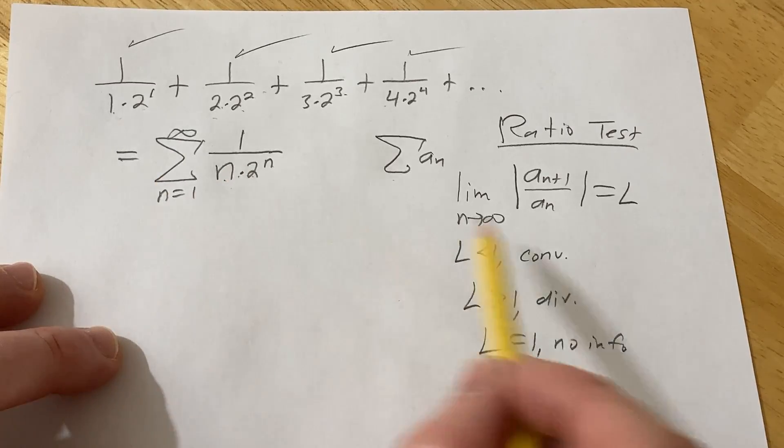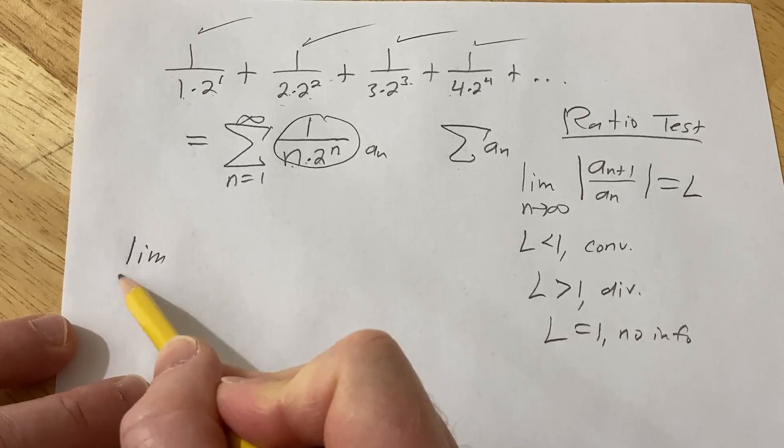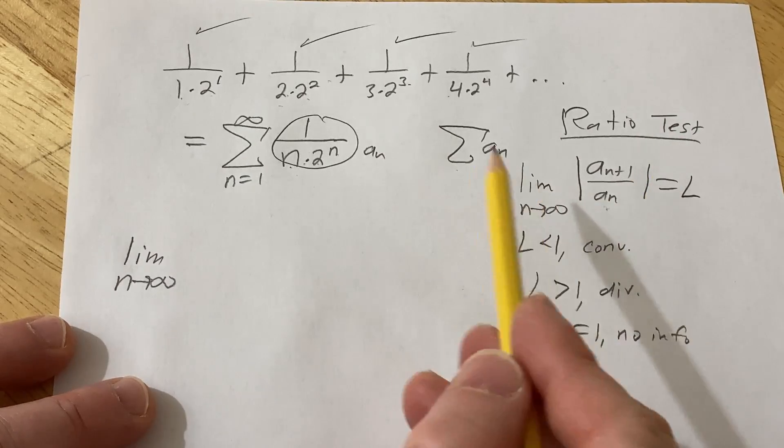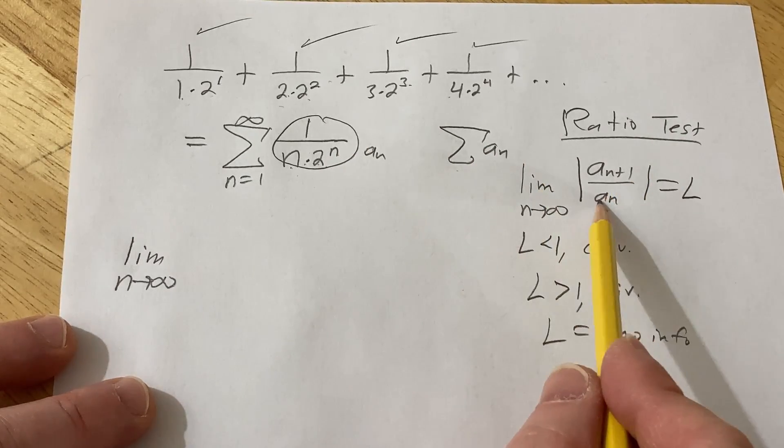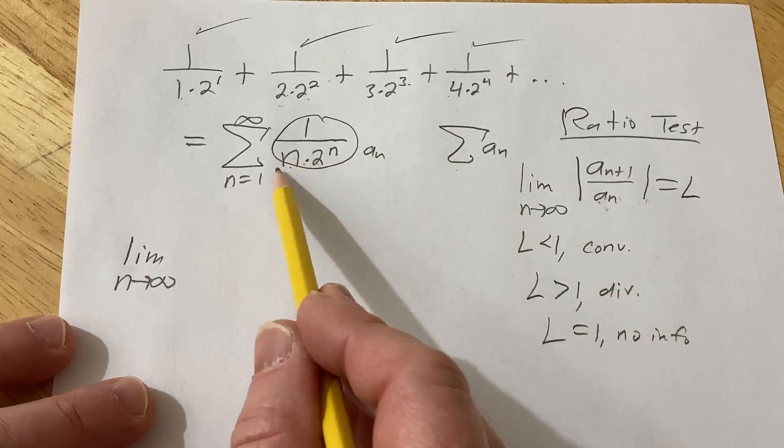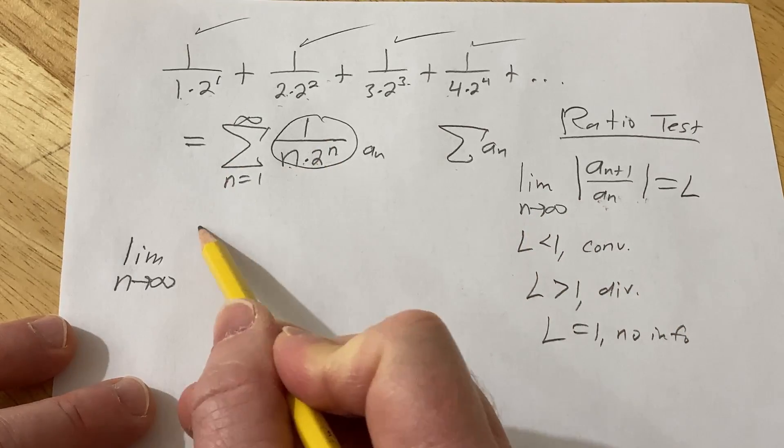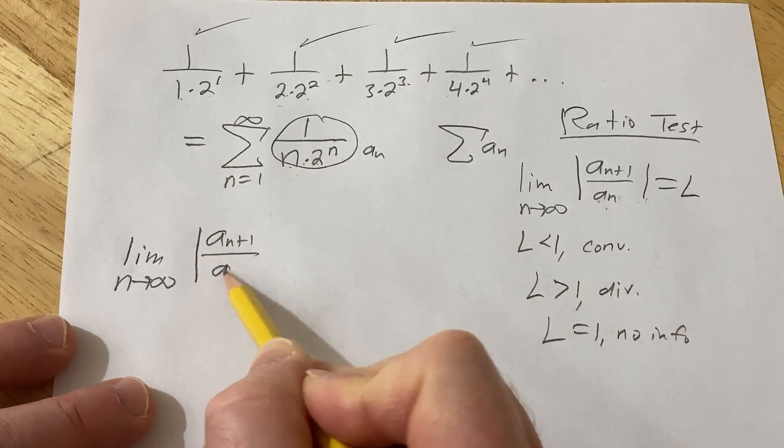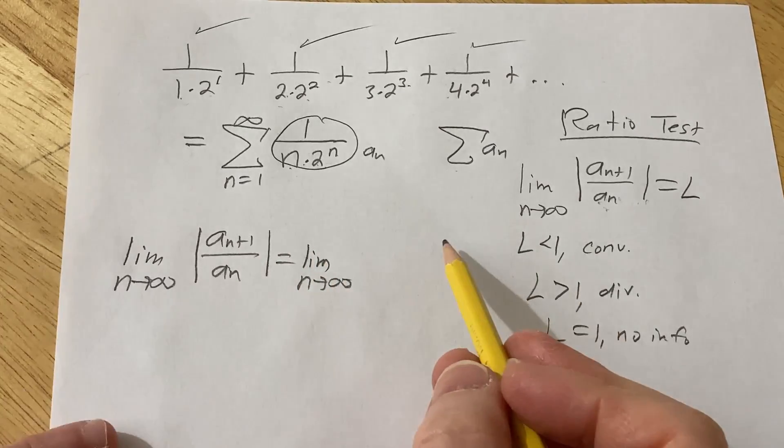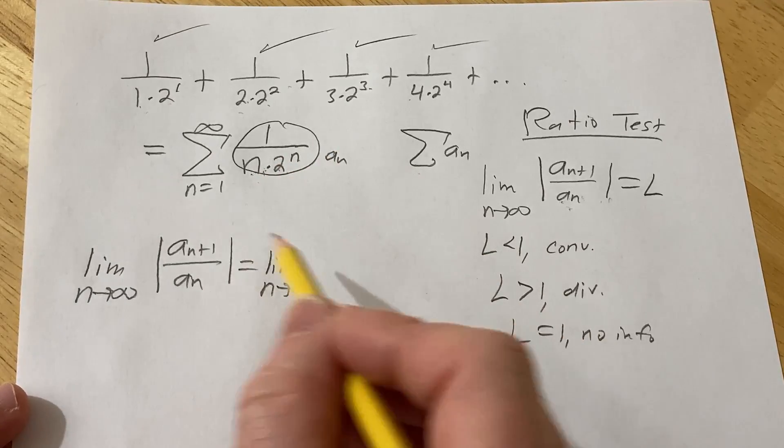So in this problem, we first have to identify our a sub n, which is right here. So let's go ahead and write it out. Limit n approaches infinity. And everything here is positive, so you don't really need the absolute value. You have to be careful though. Normally when you're dealing with power series, you'll have like an x, and you don't know if x is positive or negative. So you do want to leave the absolute value. However, in this case, we know n is always positive, and everything here is positive, so it's not necessary. But I'll write it anyways in the first step, just for good form. This is the limit. As n approaches infinity. So a sub n plus one, basically you go here and you plug in an n plus one.